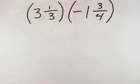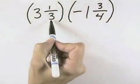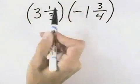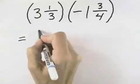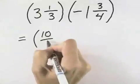So for the first fraction, what we'll have is 3 times 3 is 9, plus the 1 in the numerator is 10, so the first one will become 10 over 3.